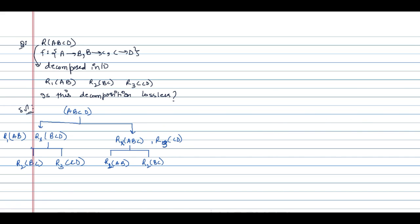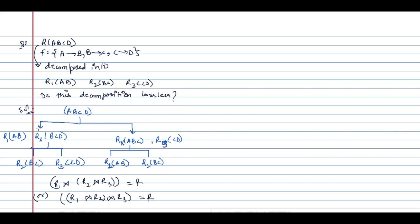You can say a decomposition is lossless if and only if R1 natural join R2 natural join R3 equals R. For a relation to be lossless, the common attribute in both relations should be a key in at least one of the tables. Here the functional dependencies given are A determines B, B determines C, and C determines D.